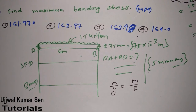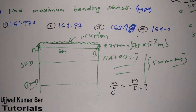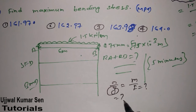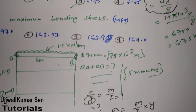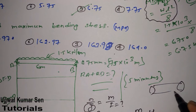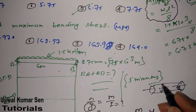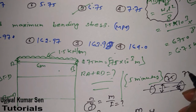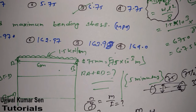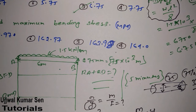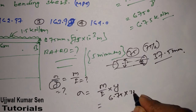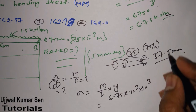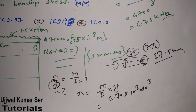Since the beam has a 75 mm diameter, this is a circular cross section. We need to find the moment of inertia I to get maximum bending stress σ. The formula simplifies to σ = (M / I) × y, where y is the distance from the neutral axis. With diameter 75 mm, y = 75/2 = 37.5 mm. M = 6.75 × 10³ N·m, converted to N·mm: 6.75 × 10⁶ N·mm.